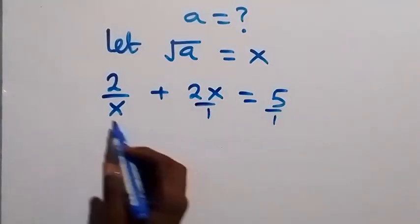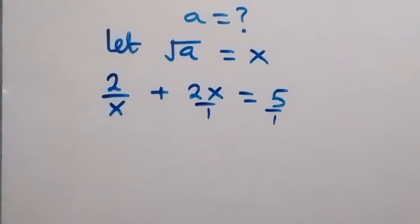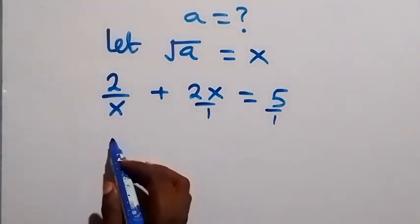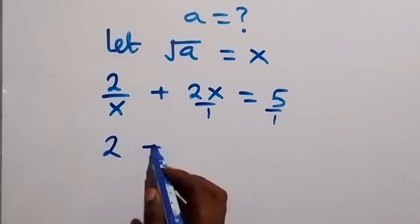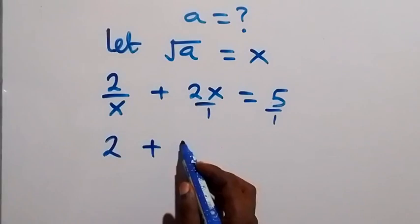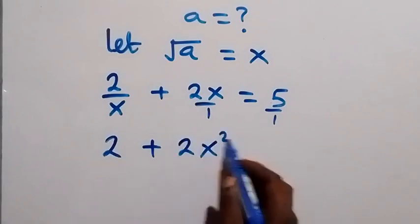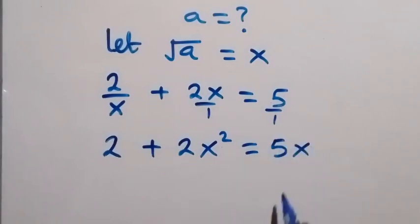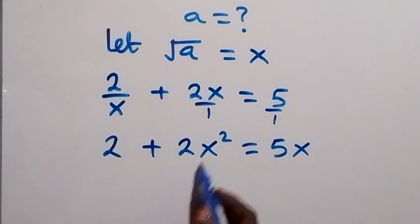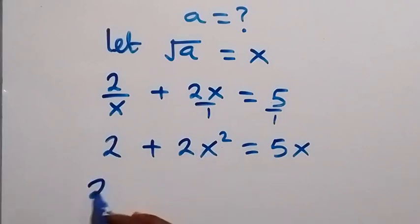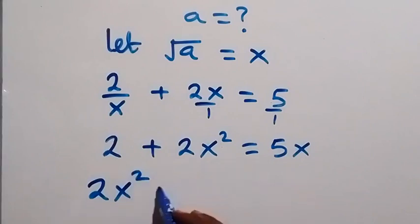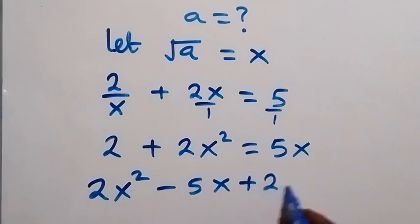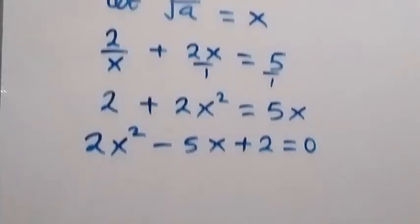To clear the fraction, we multiply through by x, which is the LCM. Multiplying 2/x by x leaves 2, and multiplying 2x by x gives 2x squared, which equals 5x. Taking 5x to the other side and rearranging gives us 2x squared minus 5x plus 2 equals 0.